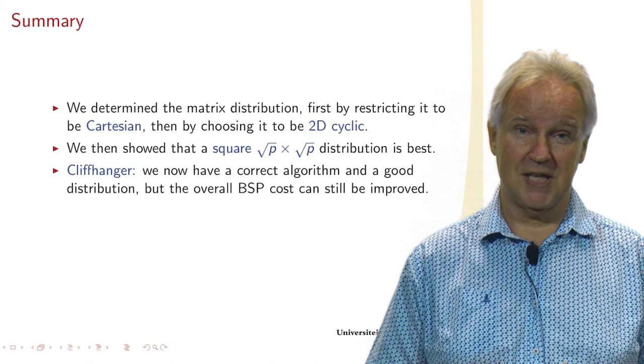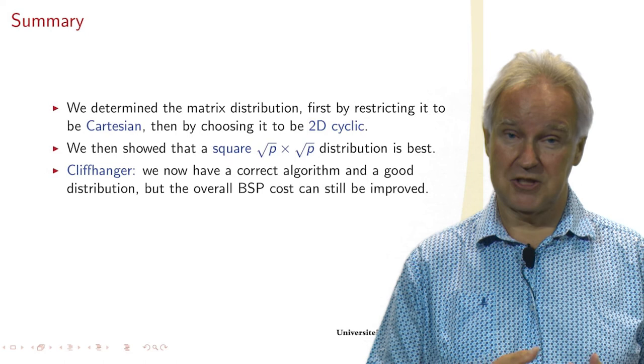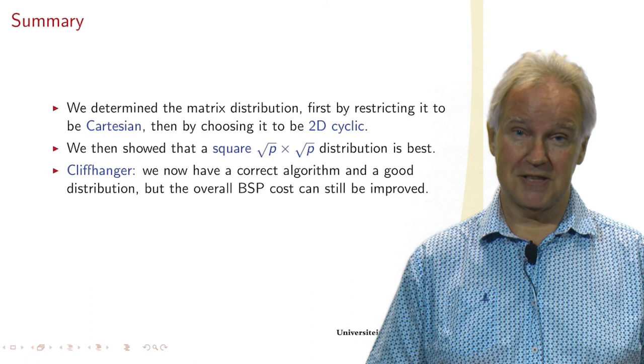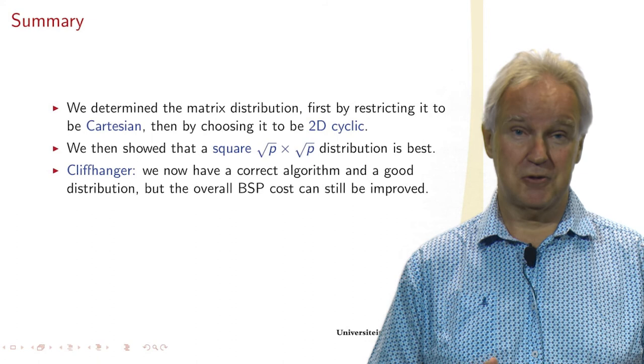And then we saw that by choosing it to be 2D cyclic, we further limited communication and also took care that the load balance is better. Then for cyclic distribution, we found out that a square distribution is the best. So square root P times square root P distribution.